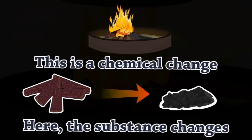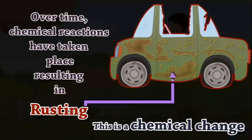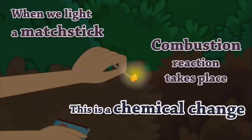Also, over time, chemical reactions take place resulting in rusting — rust on iron and metal. Rusting is a chemical change because we get a new substance called rust. Also, when we light a matchstick, a combustion reaction takes place, and this is also a chemical change because a combustion reaction occurs.